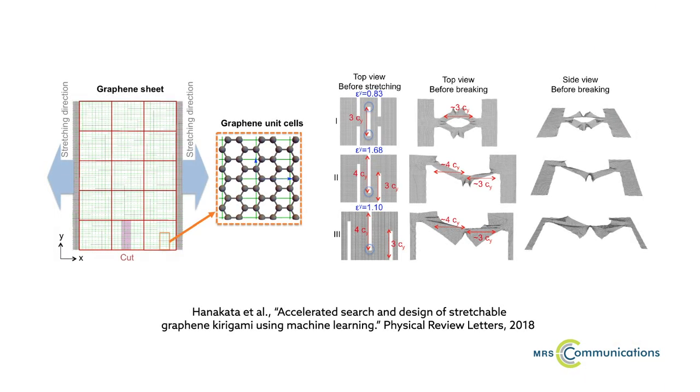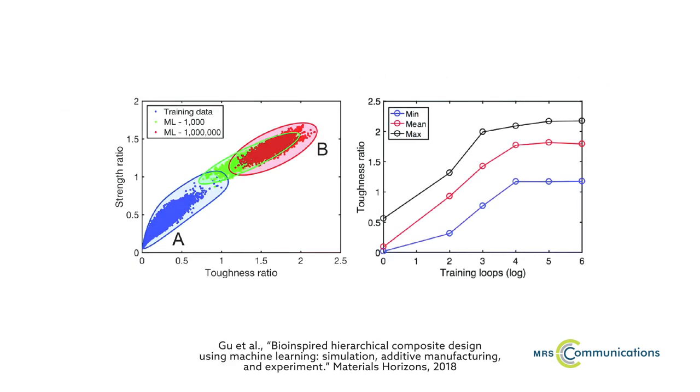For instance, researchers have used an iterative screening process to search for high-performing forms of graphene that resemble origami. And Dr. Gu and colleagues have used convolutional neural networks to design composites for strength and toughness.